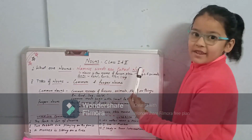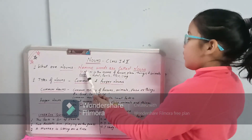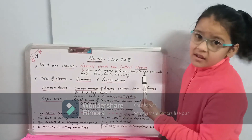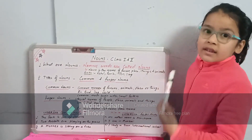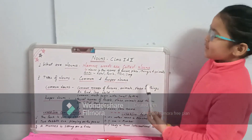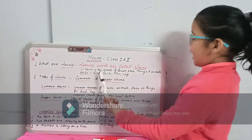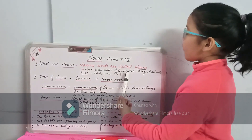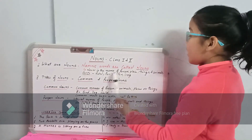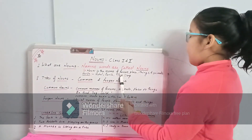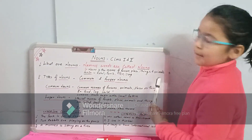Naming words are called nouns. A noun is the name of a person, place, things, and animals. For example, Rahul is the name of a person. Pan is the name of a place and also the name of a thing, and dog is the name of an animal.